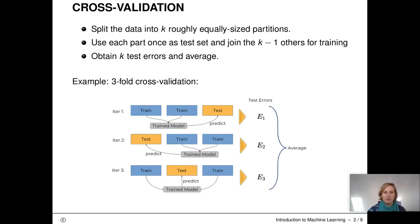In cross-validation, we split the data into k roughly equally sized partitions or also called folds. We use each part once as a test set. The respective remaining parts are then the training set. This way we obtain k test errors, k measures. We average over them to get a stable result. The size of the training and test sets depends on the size of the data and the number of folds. The more folds, the smaller is the test set and the larger is the training set in each iteration.